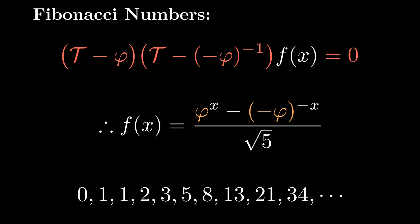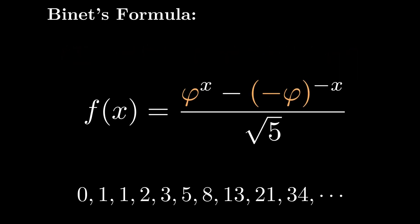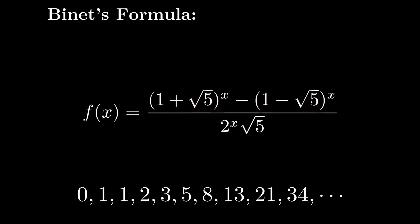And f of 1 equals 1. Giving us this equation. Which boils down to 1 over the square root of 5. And, just like that, we were able to use our calculus knowledge to find a closed form for the Fibonacci numbers. This is known as Binet's formula, and if you write it out in full, it looks like this.